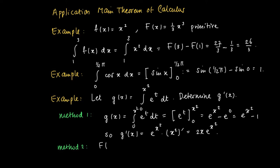A different method uses the Main Theorem of Calculus in a different way. First, we may define a primitive of the function e to the power t, which is given by capital F. Then realize that g(x) is simply F(x squared). If we substitute x squared for x, we get g(x).